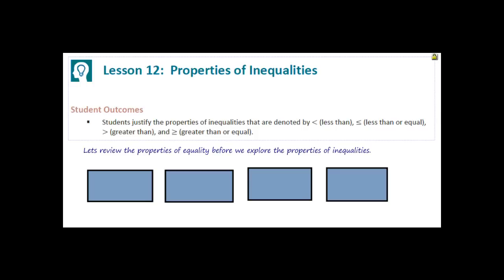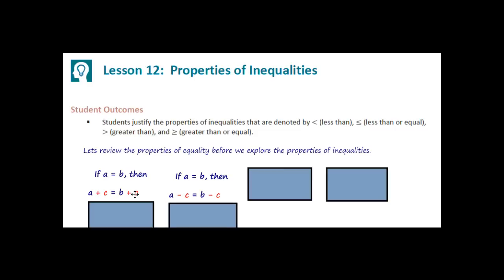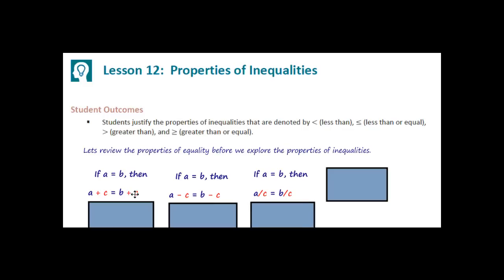Let's review the properties of equality before we explore the properties of inequalities. If A equals B, then A plus C equals B plus C. If A equals B, then A minus C equals B minus C. If A equals B, then A divided by C equals B divided by C. And if A equals B, then A times C equals B times C. The properties of equality say that if two statements are equal to begin with, and you perform the same operation with the same number on both sides of the equal sign, they will remain equal.